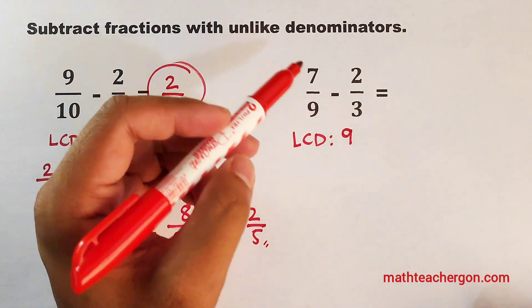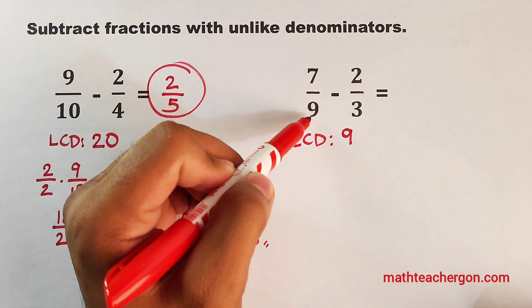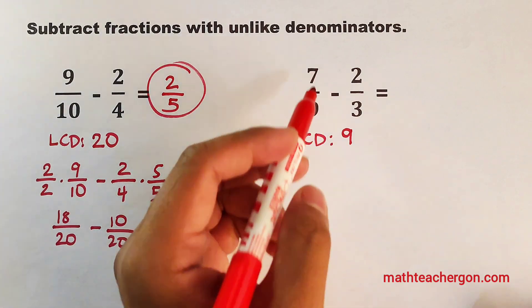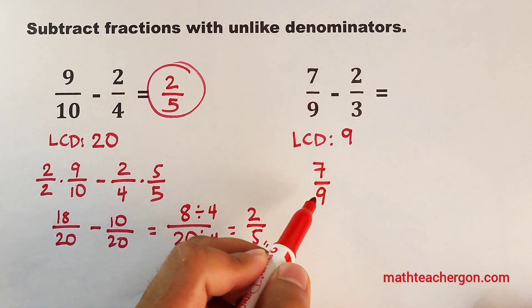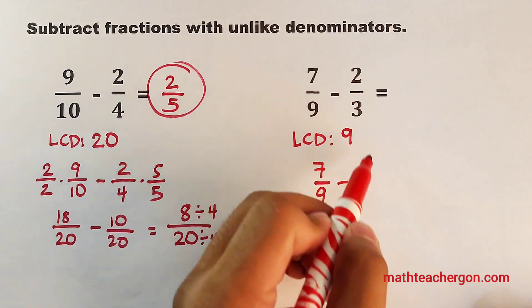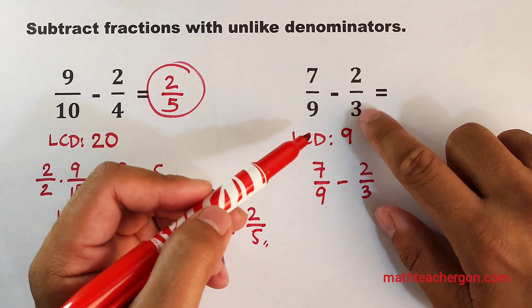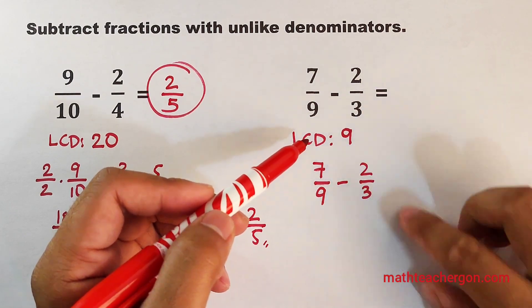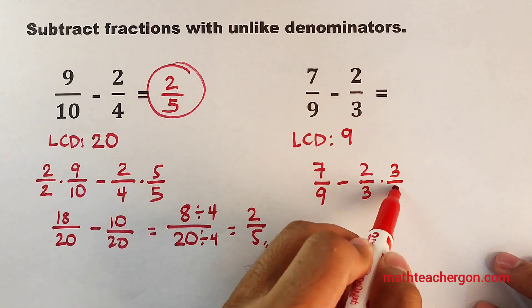since the denominator is already 9, we don't need to multiply it by 1 over 1. Okay, so we will just copy 7 over 9 minus, copy your 2 thirds, then this 3 should be multiplied by 3 to make it 9, meaning you multiply this by 3 over 3.